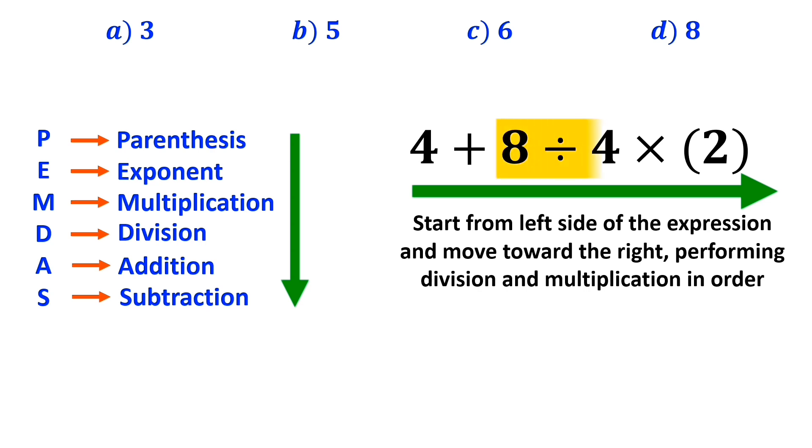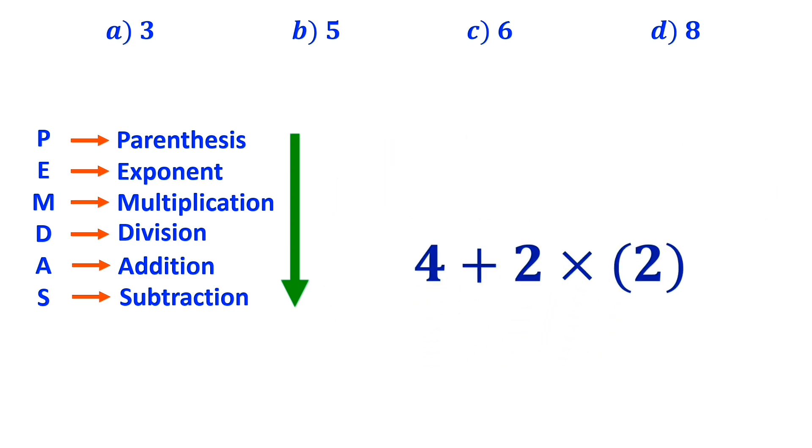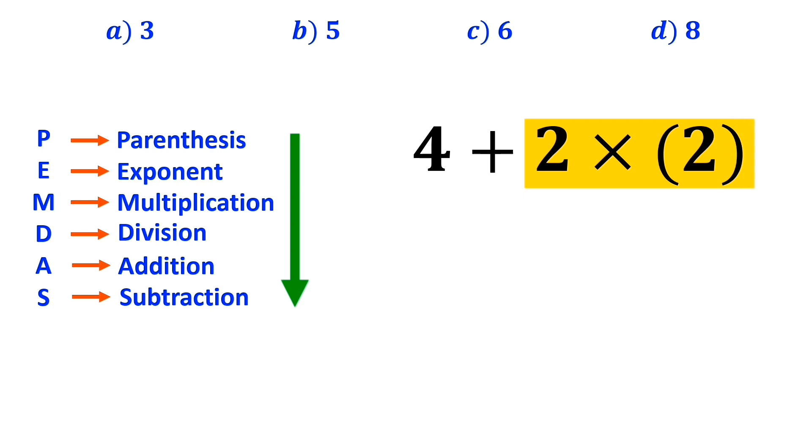So, first we perform the division between 8 and 4, which simplifies the expression to 4 plus 2 times 2. In the next step, it's time for the multiplication between the twos, because multiplication has priority over addition.